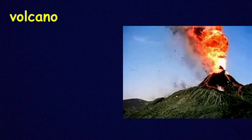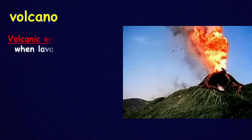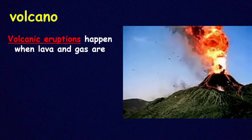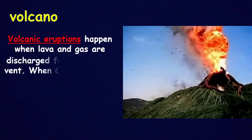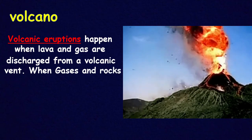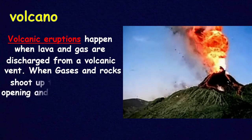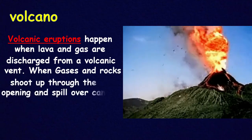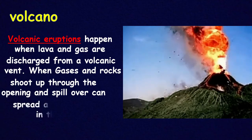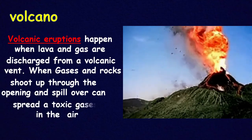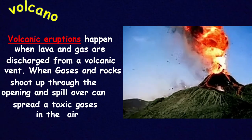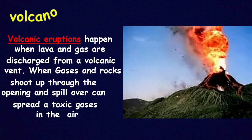Do you know what that is? We call it a volcano eruption. It happens when lava and gas are discharged from a volcano vent. It's so scary! When gases and rocks shoot up through the opening and spill over, they can spread toxic gases in the air.